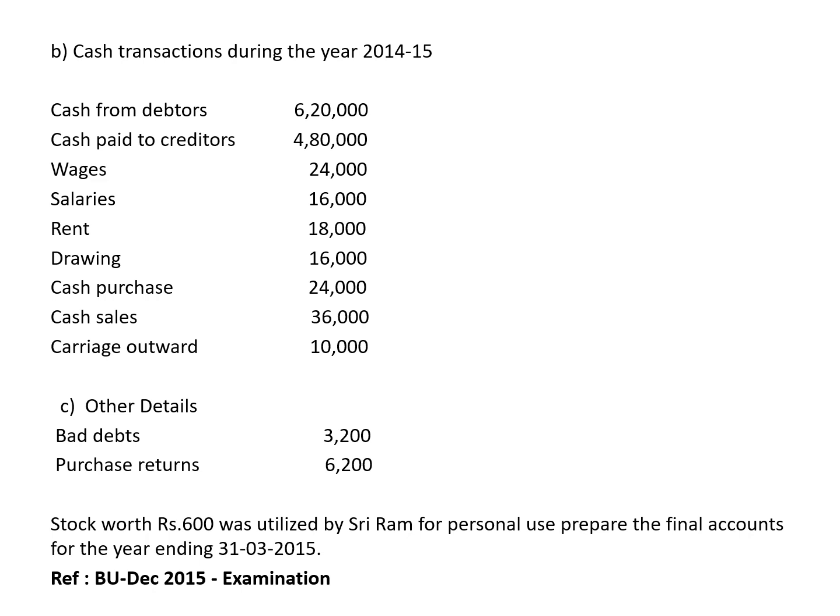Adjustment: stock worth Rs. 600 was utilized by Sriram for personal use — this is drawings of goods. In the trading account, take purchases less returns less drawings of 600. The same should be adjusted in the balance sheet towards the liability side when adjusting the capital.